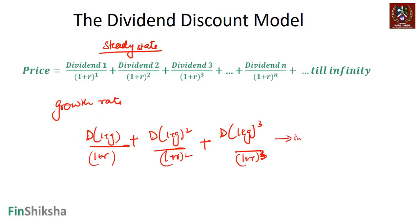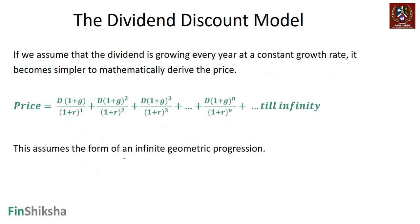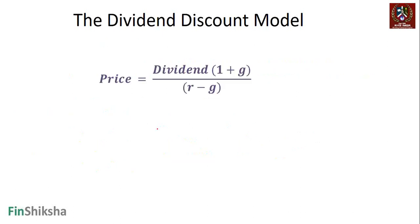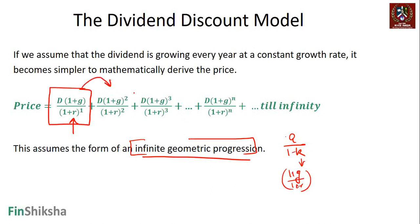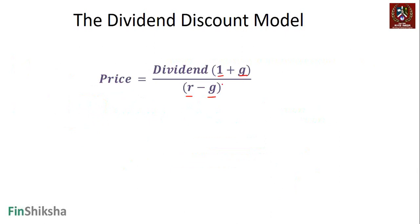The sum of an infinite geometric progression is given as a/(1−K), where a is the first term and K is the multiplication factor, which here is (1+G)/(1+R). Solving this formula gives us: Price = D×(1+G) / (R−G). That is what the dividend discount model gives us as the valuation formula.